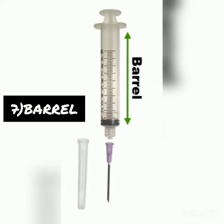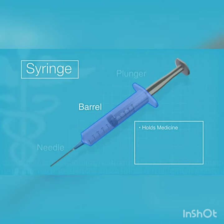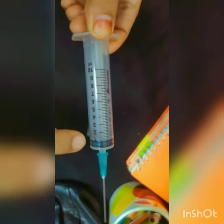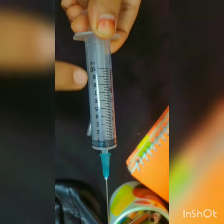Barrel: the barrel holds the medicine. The marks on the side of the barrel are similar to the marks on a ruler and indicate the number of milliliters or cubic centimeters the syringe will hold.